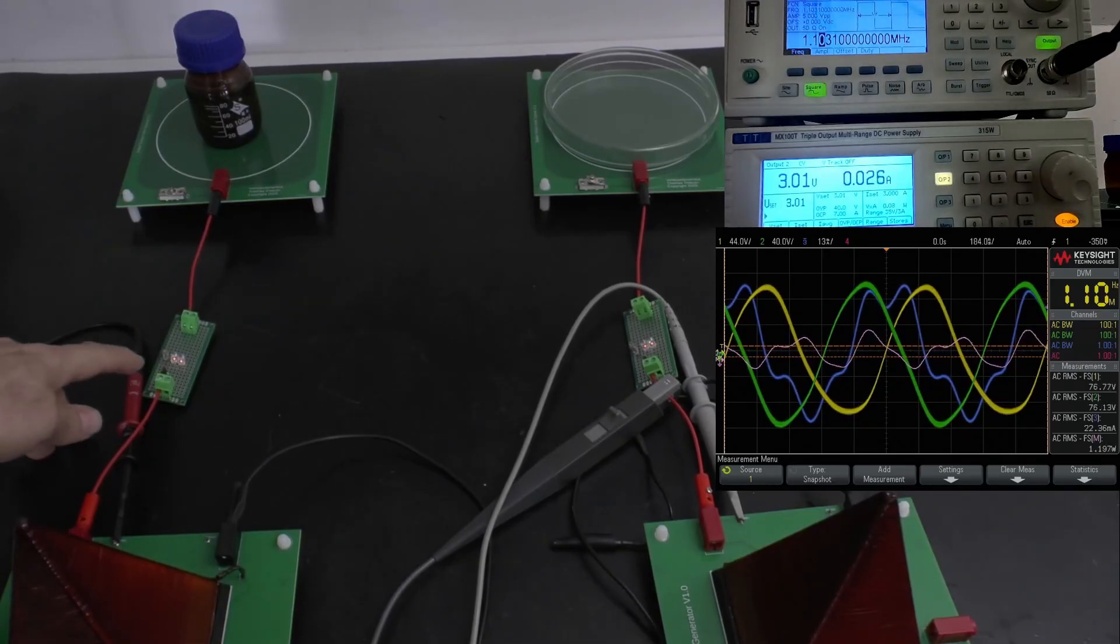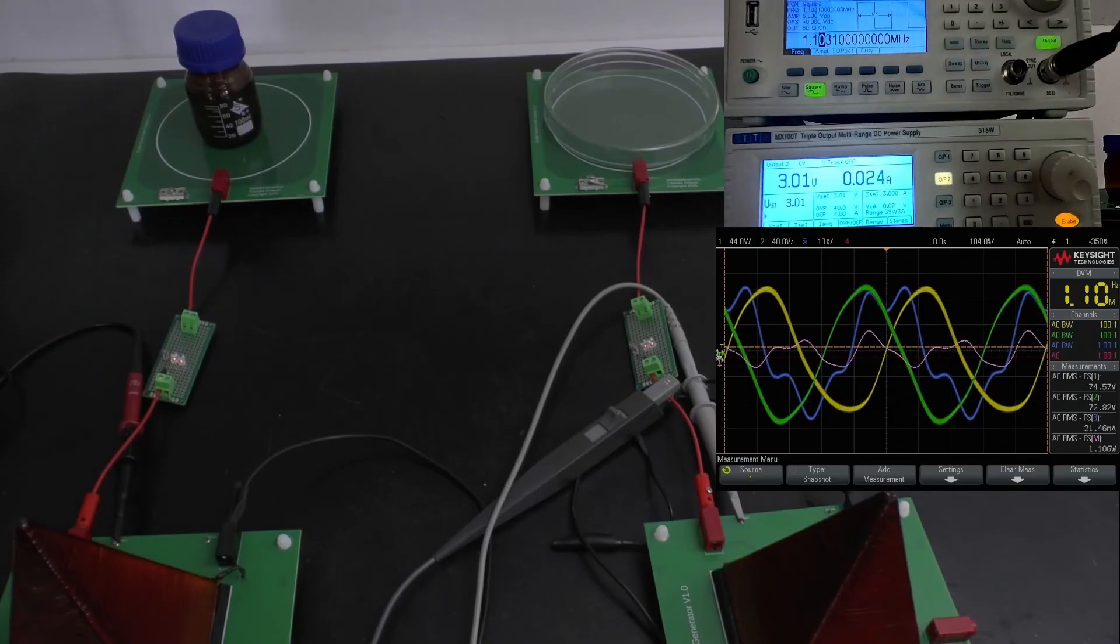The neon light bulb, as mentioned, illuminates when we achieve more than 90 volts, but we need also to have the right phase for the current. That's important.